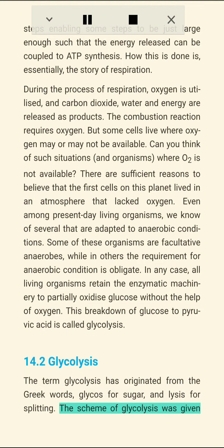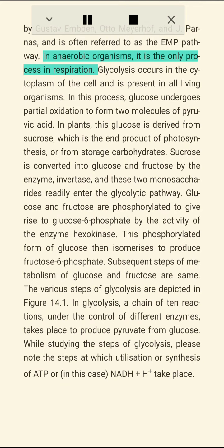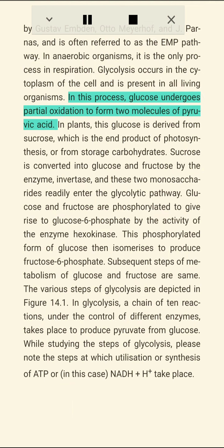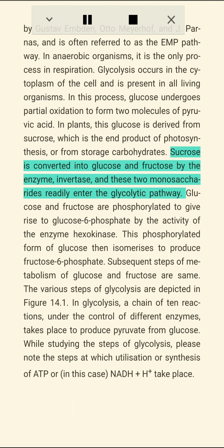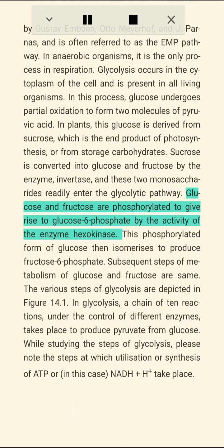14.2 Glycolysis. The term glycolysis has originated from the Greek words glycos for sugar and lysis for splitting. The scheme of glycolysis was given by Gustav Emden, Otto Meyerhoff, and J. Parnas and is often referred to as the EMP pathway. In anaerobic organisms, it is the only process in respiration. Glycolysis occurs in the cytoplasm of the cell and is present in all living organisms. In this process, glucose undergoes partial oxidation to form two molecules of pyruvic acid. In plants, this glucose is derived from sucrose — the end product of photosynthesis — or from storage carbohydrates. Sucrose is converted into glucose and fructose by the enzyme invertase, and these two monosaccharides readily enter the glycolytic pathway.